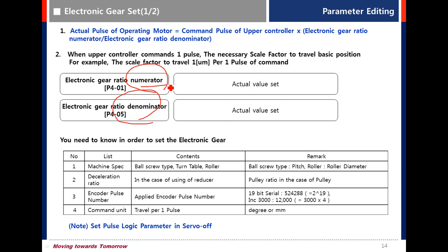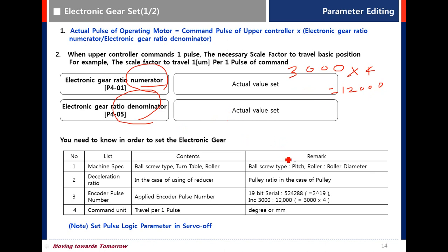When using a quadrature encoder, set the value as 4 times the encoder resolution. For example, for a 3,000 pulse encoder, set the value to 12,000. When using a serial type encoder, set the actual value. For example, for a 19-bit encoder, set 524288.